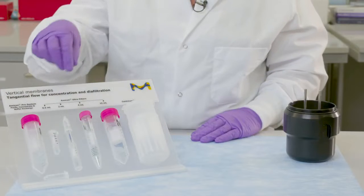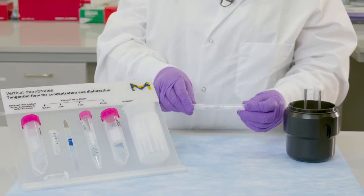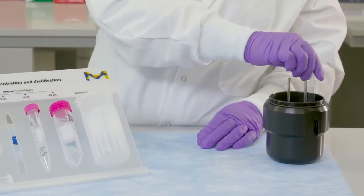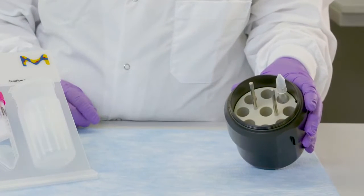The Amicon Ultra 2 allows for 2 mil filtration and can reach concentration factors of greater than 100x. Centrifuge with a swinging bucket rotor or fixed angle rotor with wells and carriers that can accommodate 17 by 100 millimeter flat bottom tubes.